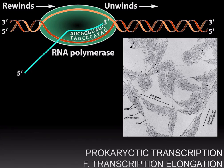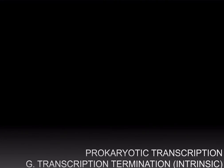An RNA polymerase molecule will come and find the promoter and start transcribing, and as soon as it is on its way, another molecule will come in and start transcribing. The third stage in prokaryotic transcription is transcription termination.